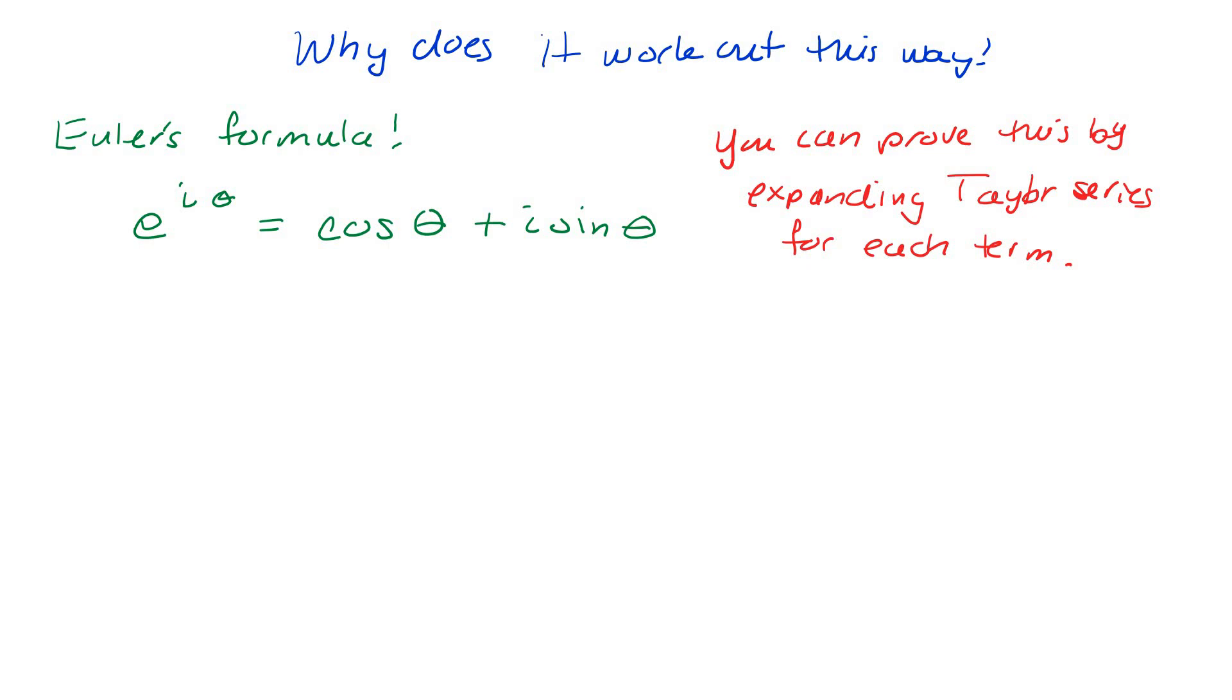Cosine theta is all the even terms of the series. It's an even function. Sine theta is an odd function. You have 1 minus x cubed over 3 factorial plus x to the 5th over 5 factorial. You sum it all up into this and you show that they're actually all equal.